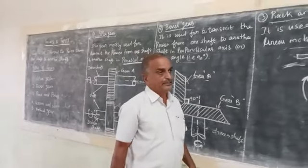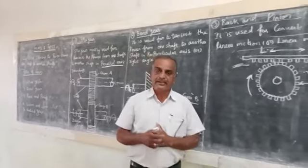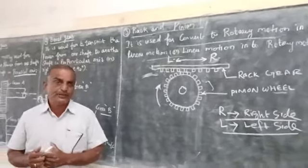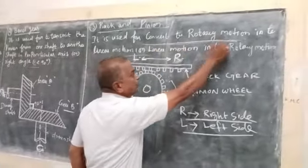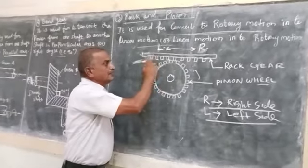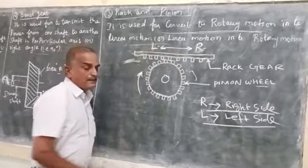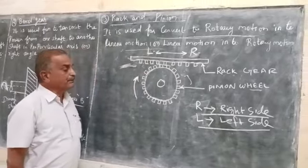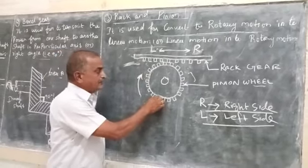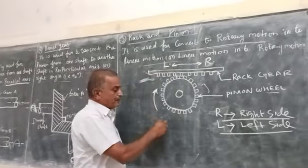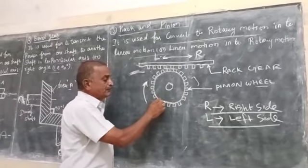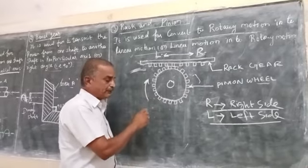Rack and pinion. The rack and pinion is mainly used to convert rotary motion into linear motion. The pinion is connected to a motor shaft, and as the pinion rotates, it drives the rack, converting the rotational movement into linear movement.